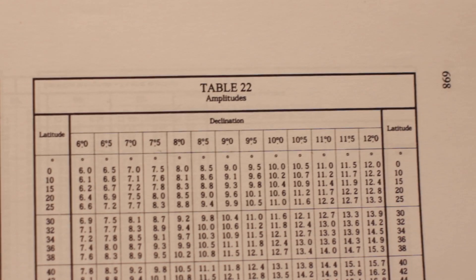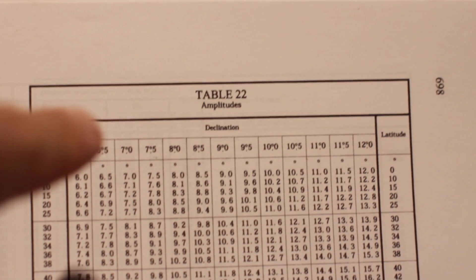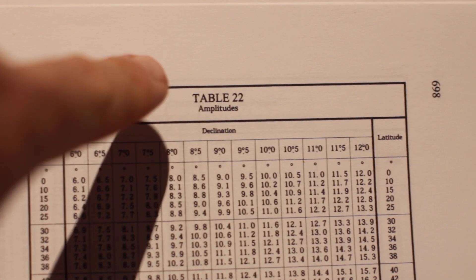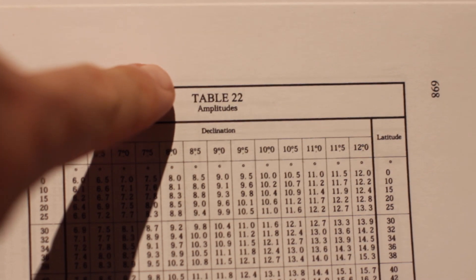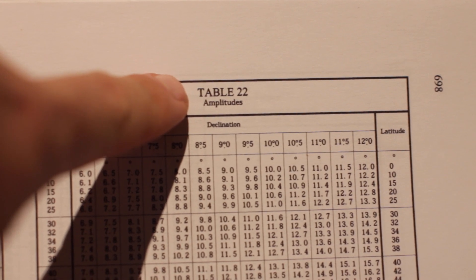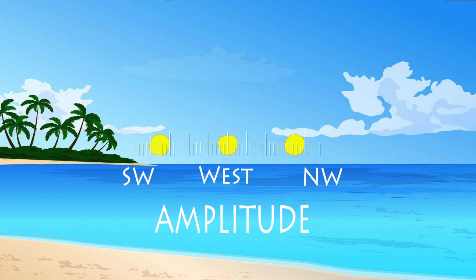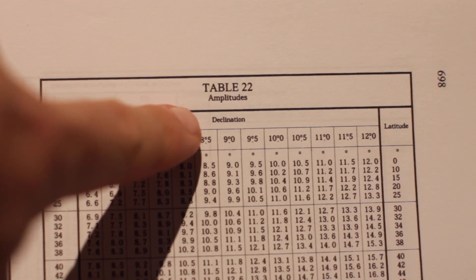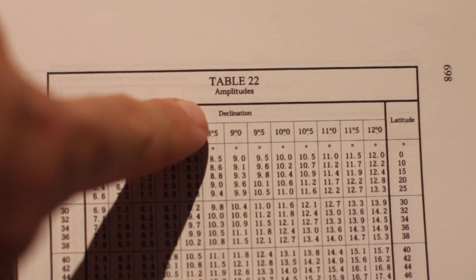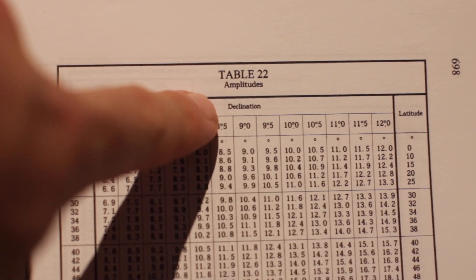But how do you calculate the bearing to sunrise or sunset? Table 22 in the back of Bowditch is the key. Table 22 simply lists amplitudes — this is the number of degrees away from true west for sunset, or true east for sunrise, that the sun should be at.